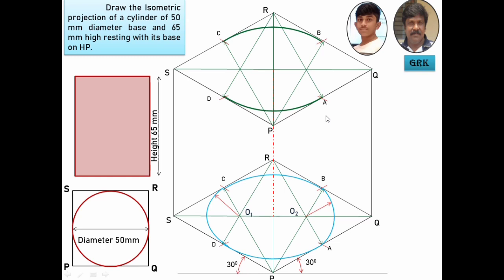With these centers O1 and O2, we can draw the other arcs. With O1 as center, OC as radius, you can draw an arc CD. With O2 as center, O2B as radius, you can draw an arc BA. This completes the top surface.